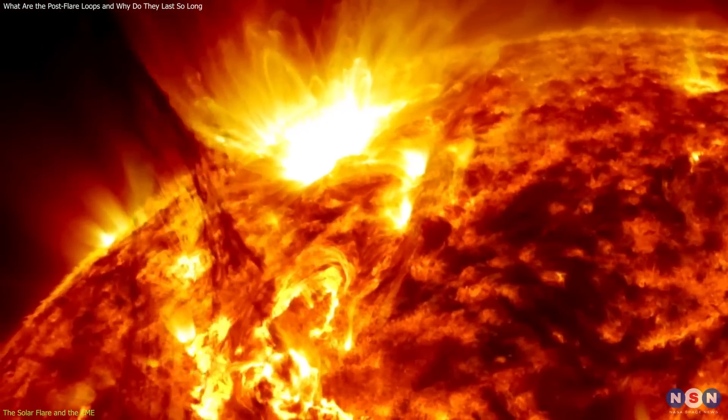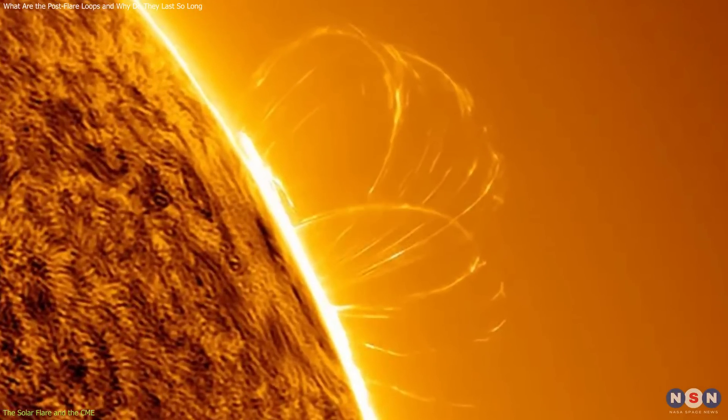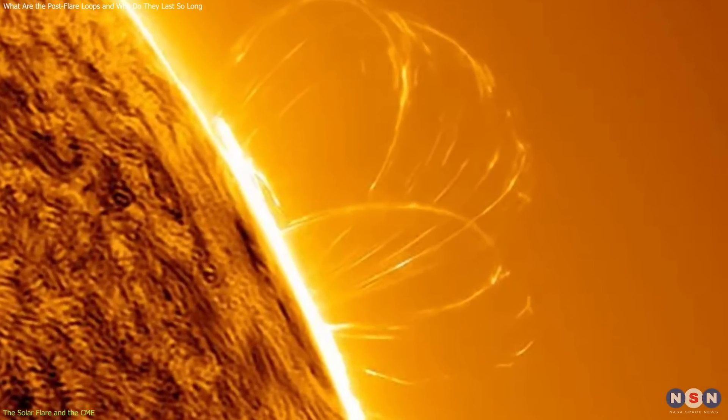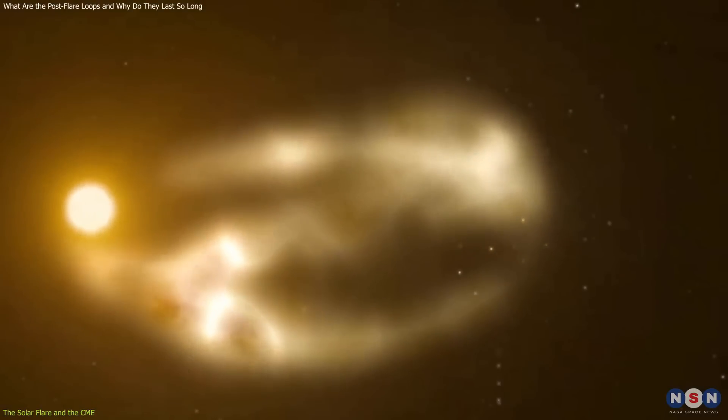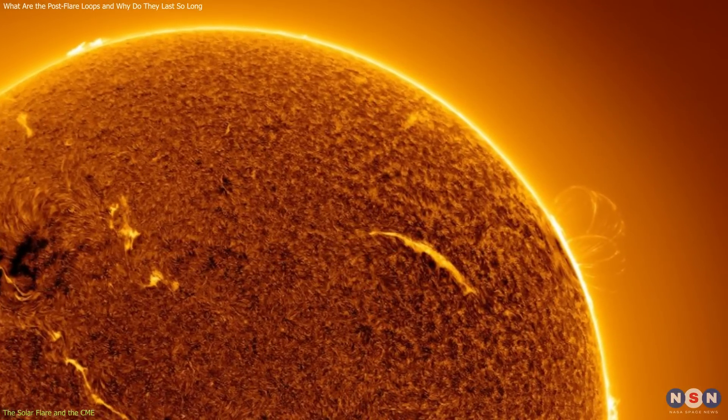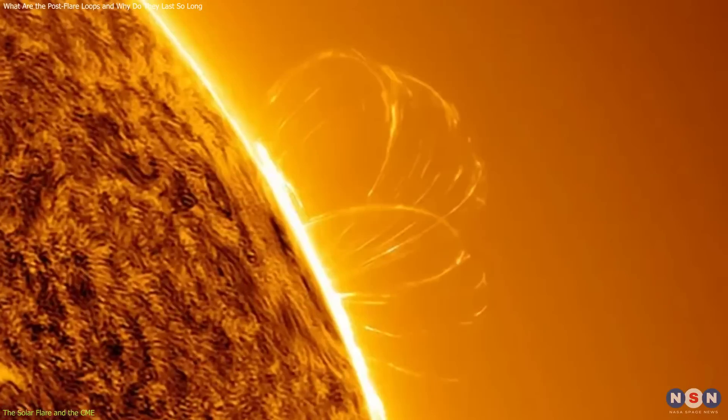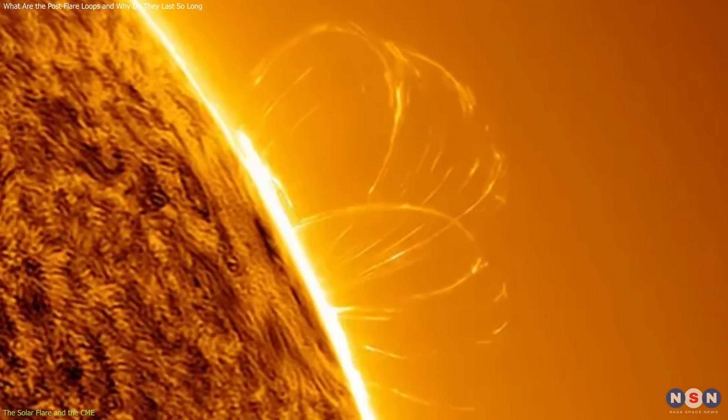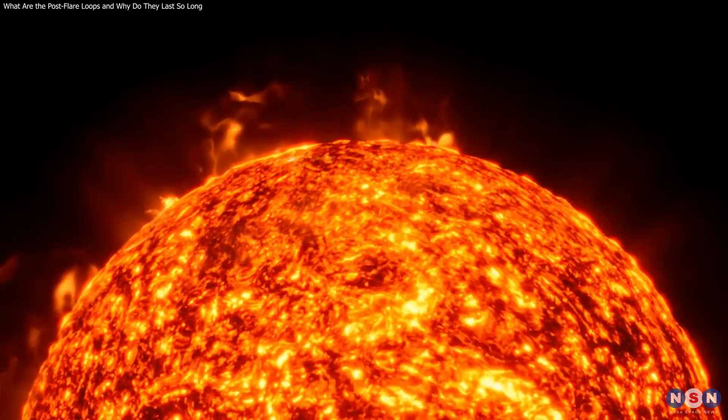One of the most stunning images of the solar storm was captured by Eduardo Schaberger-Pupot, an amateur astrophotographer from Argentina. He used a special telescope and camera to snap a picture of the faint plasma loops towering above the solar surface, right where the CME had exploded from. The loops are known as post-flare loops, and they are the remnants of the plasma that was ejected into space as a CME. The post-flare loops are much cooler and dimmer than the surrounding sun, which makes them hard to see. But Pupot's photo shows them in great detail and contrast, revealing their shape and structure.